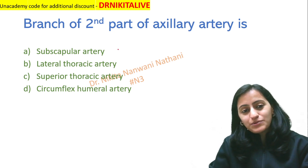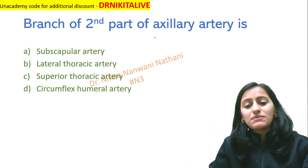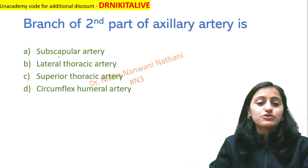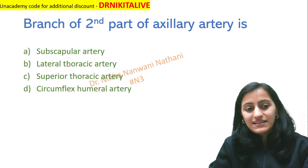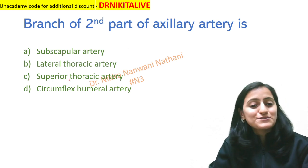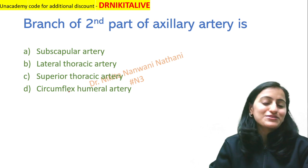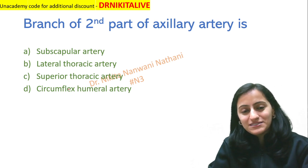The question here is: which of the following is a branch of the second part of the axillary artery? Subscapular artery, lateral thoracic, superior thoracic, or circumflex humeral?